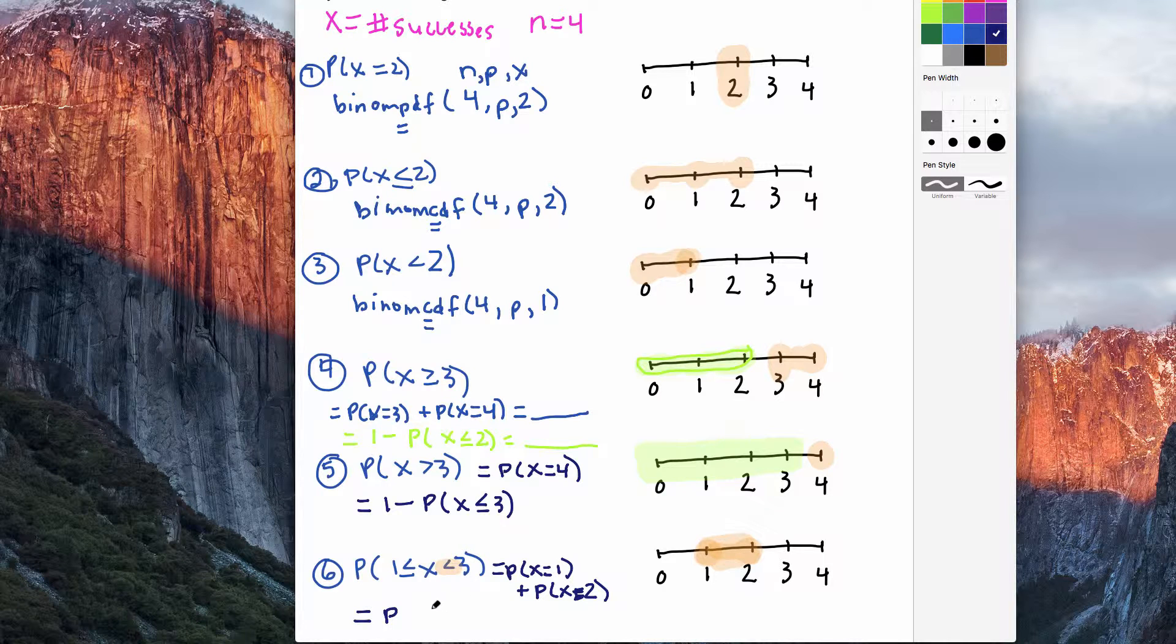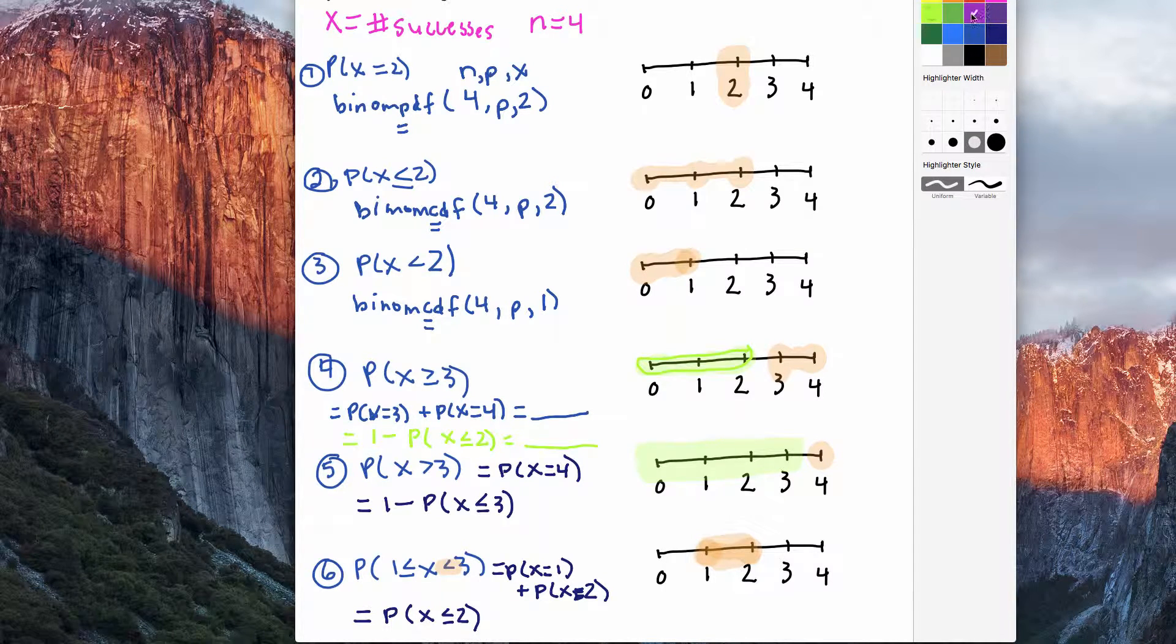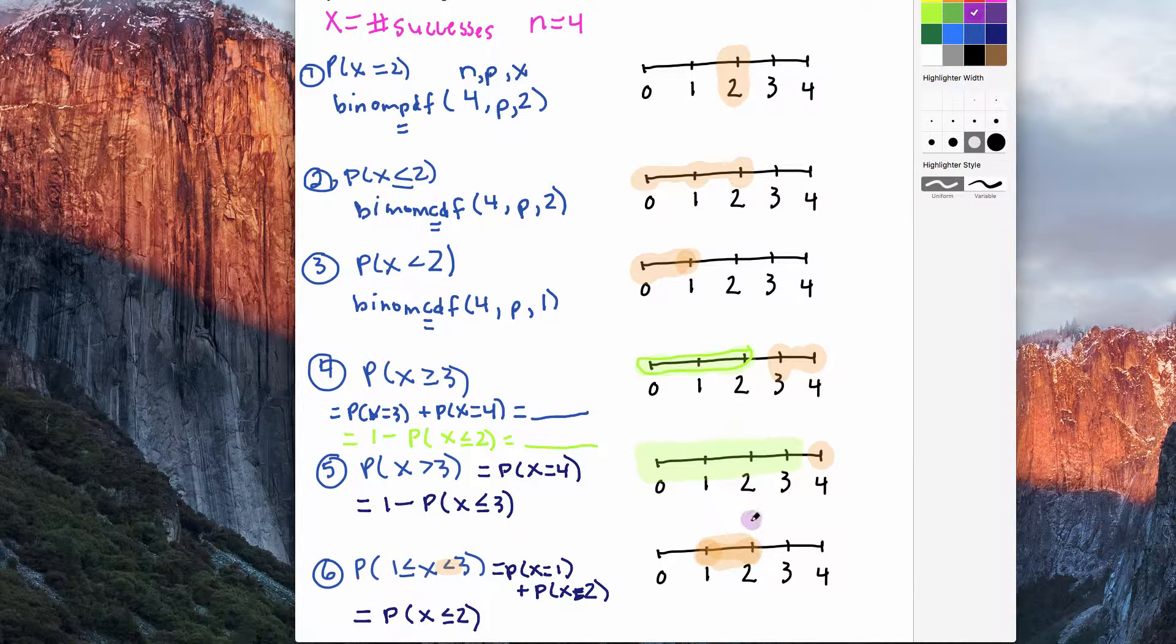So the probability that x is less than or equal to 2. I'm going to highlight this on the page here. So start at 2 and go down.